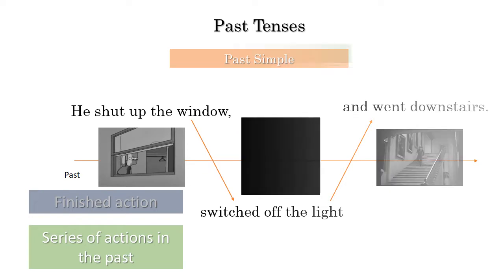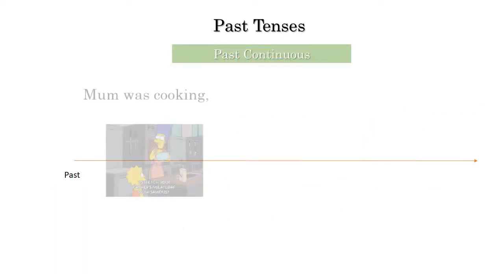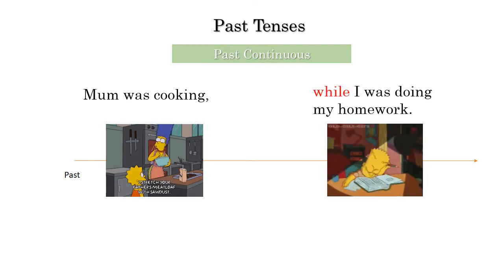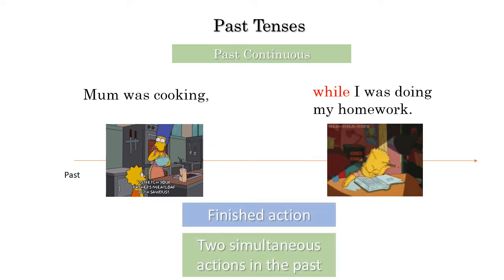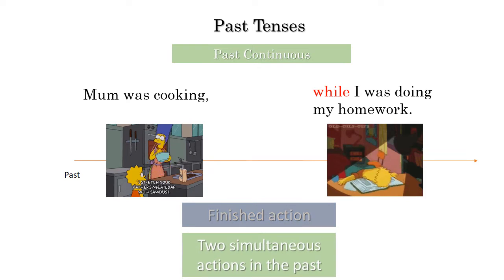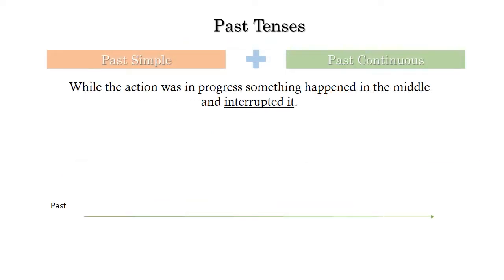What about: 'Mom was cooking while I was doing my homework'? These are parallel actions in the past — simultaneous actions. No one interrupts the other; no one stops the other. That's why we use the past continuous for both.